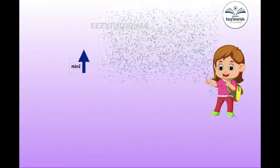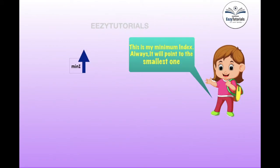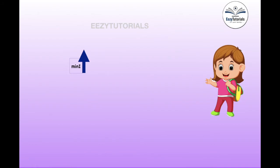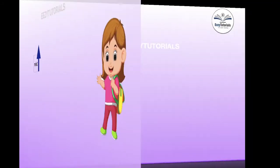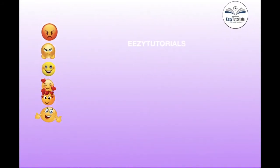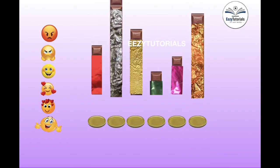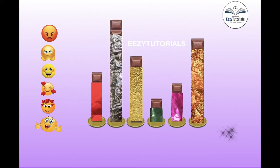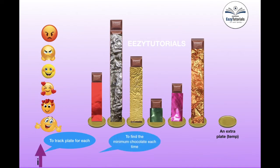This is the minimum index. This index always points to the smallest one. So these are the six friends and here are our six chocolates. We are going to use an extra plate called Thippo, and three pointers: I, minimum index, and J.